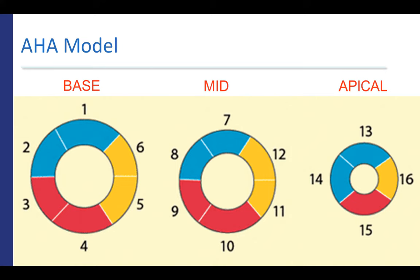These short axis segments can correspond approximately to coronary artery territories. As shown here, with the left anterior descending coronary artery territory in blue, the right coronary artery territory in red, and the circumflex territory in yellow. Of course, the specific distribution of the coronary artery territories will depend somewhat on the patient's specific anatomy.